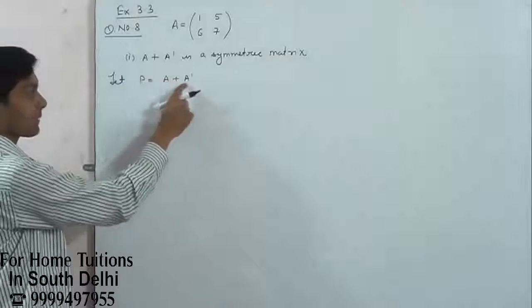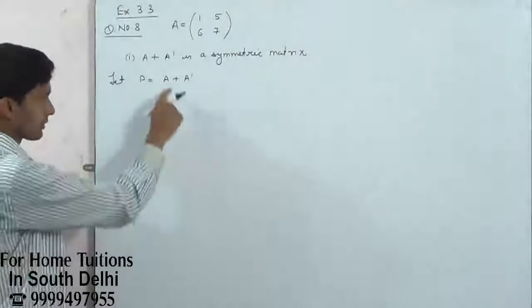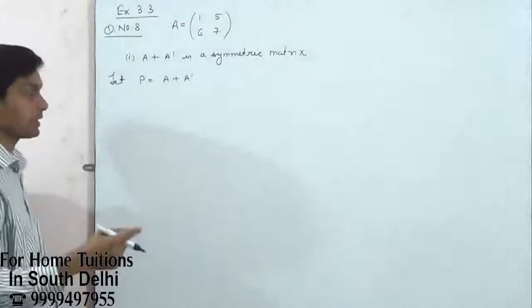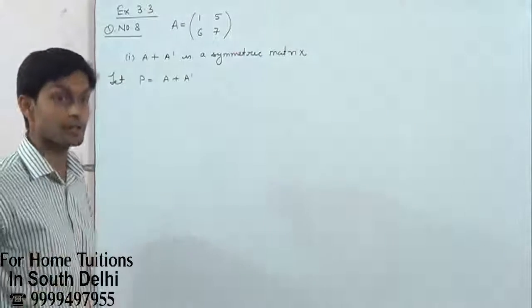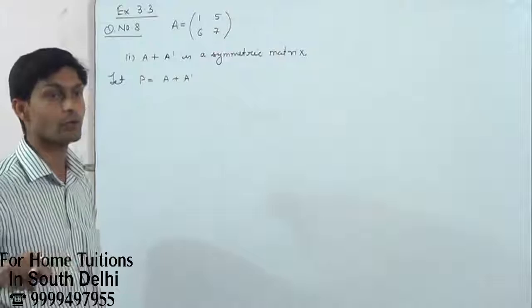We have to prove A plus A dash is symmetric matrix. This means we have to prove P is symmetric matrix. And P will be symmetric if P dash equals P.